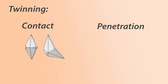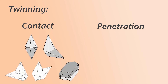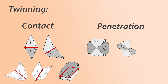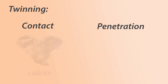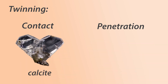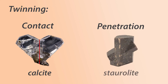Contact twins involve the twin crystals sharing only one plane between them — it looks like they're just touching each other. Penetration twins involve one of the crystals going through the other one; in other words, more than one plane is shared. Calcite is a common contact twin, since its crystals share only one plane, while staurolite is the famous penetration twin that forms little crosses and star-like shapes.